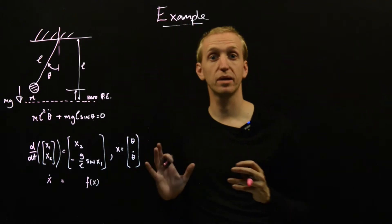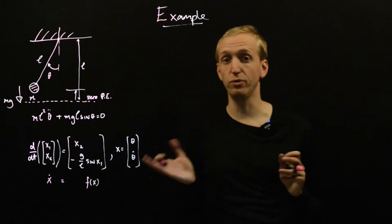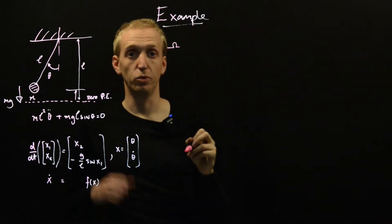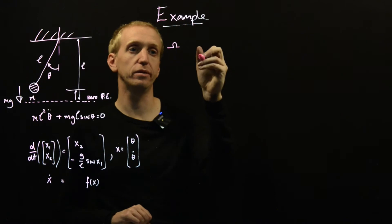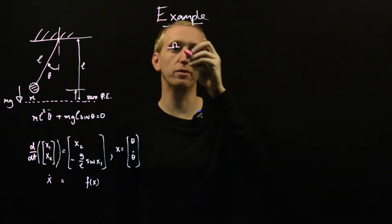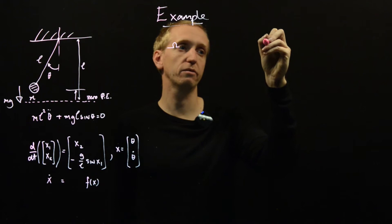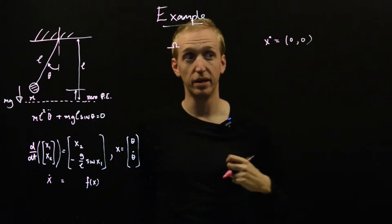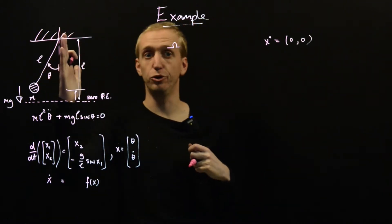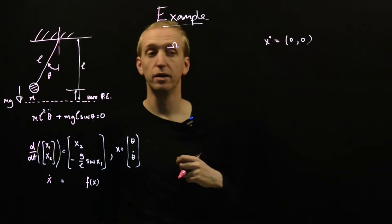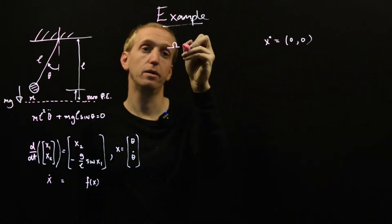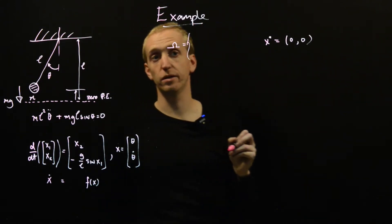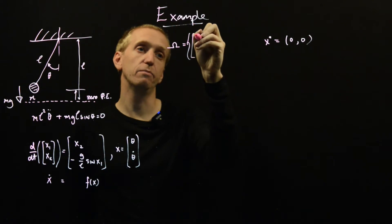So this is our equation of the form x-dot is equal to f of x, and now we would like to start doing some Lyapunov analysis. So we need a few things. We need a region omega, we need a Lyapunov function, and we need an equilibrium point. So let's just deal with omega and our equilibrium point. And we're going to look at the equilibrium point 0,0. So this corresponds to having the pendulum in the downward position here, and our region of the state space that we're going to look at.